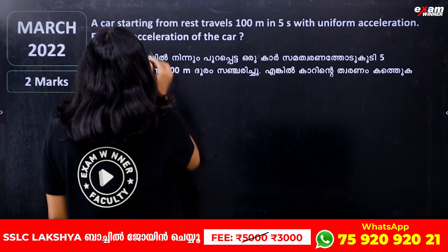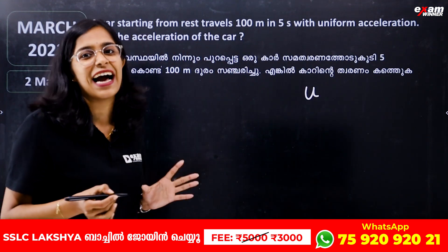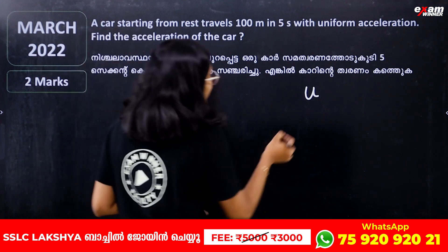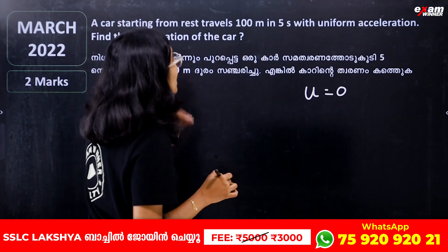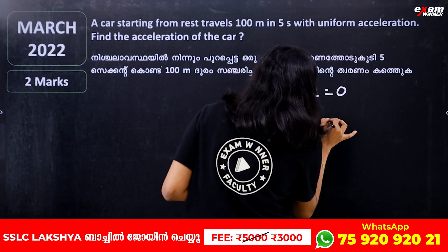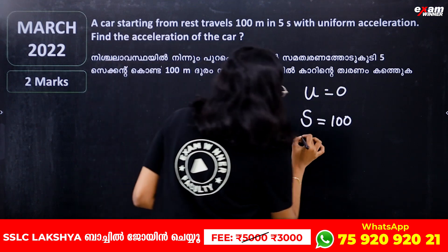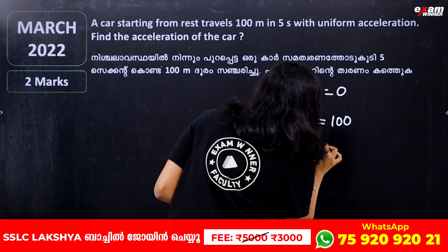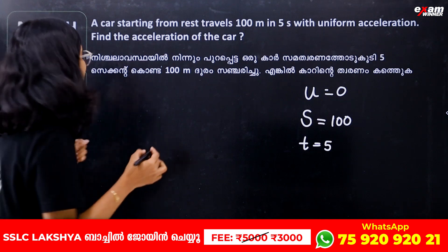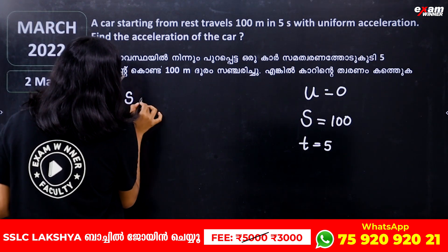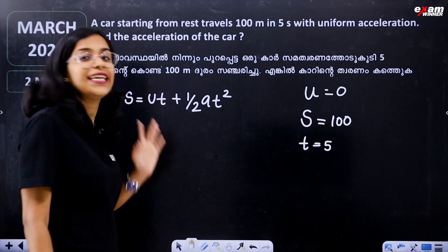Let's extract the data. The car is starting from rest, so the initial velocity is zero. The car travels 100 meters in 5 seconds. To find acceleration, we use the equation S equals UT plus half A T squared.